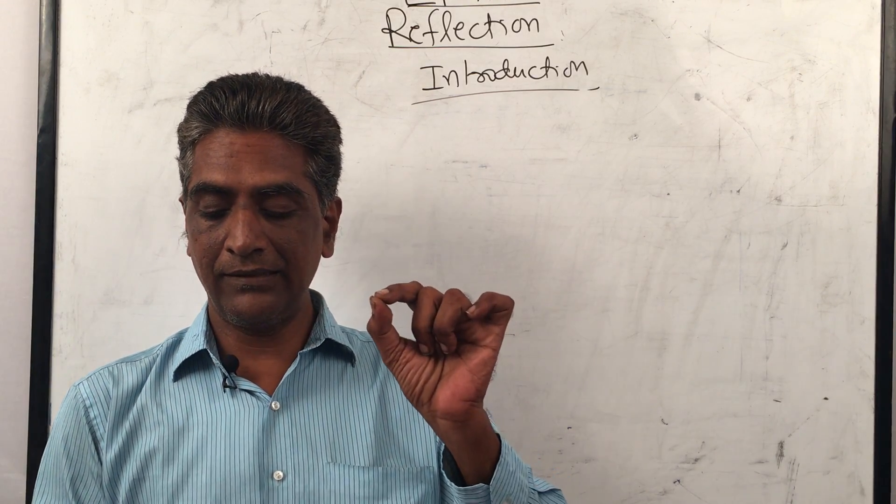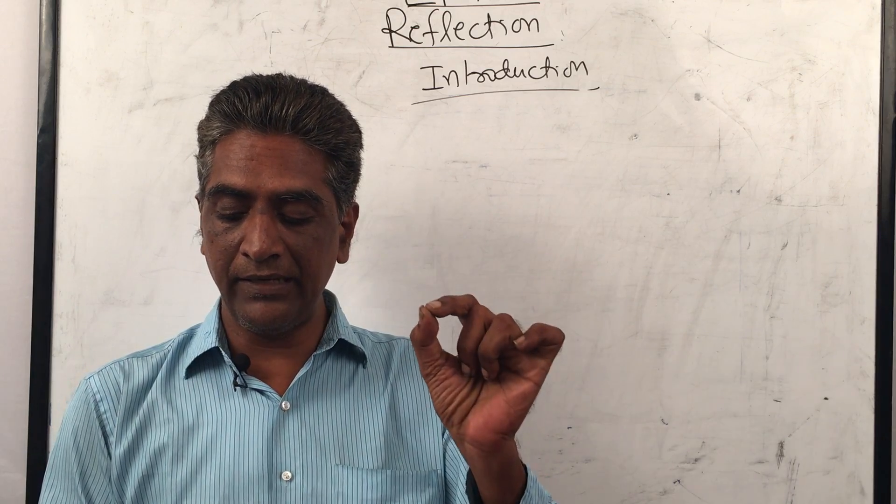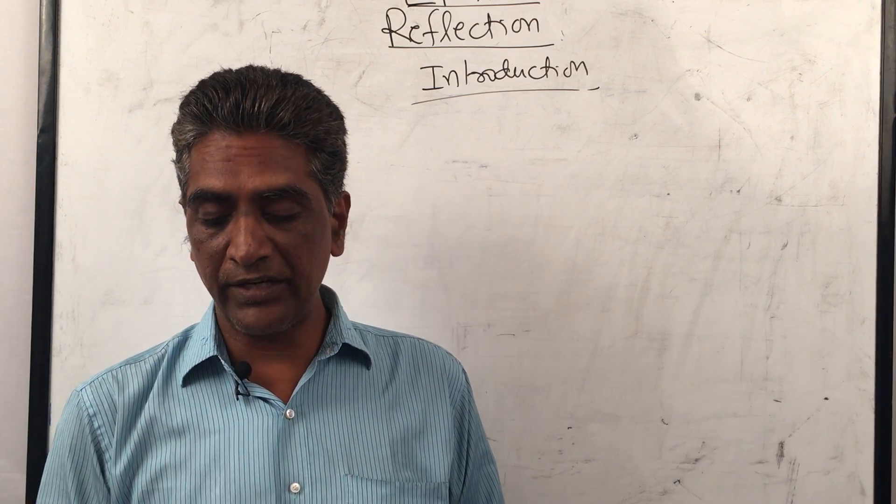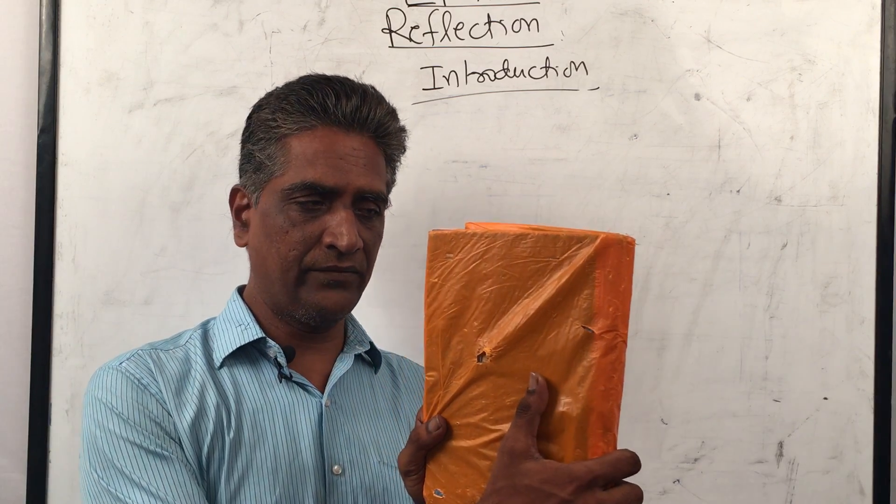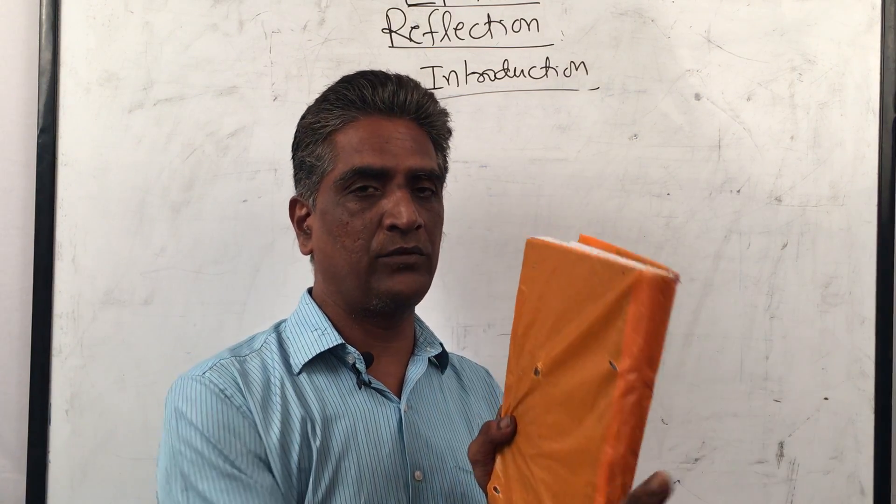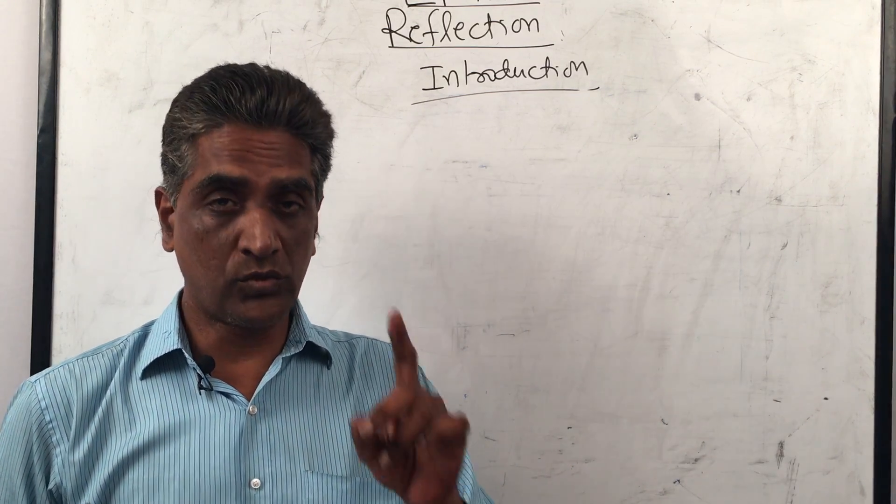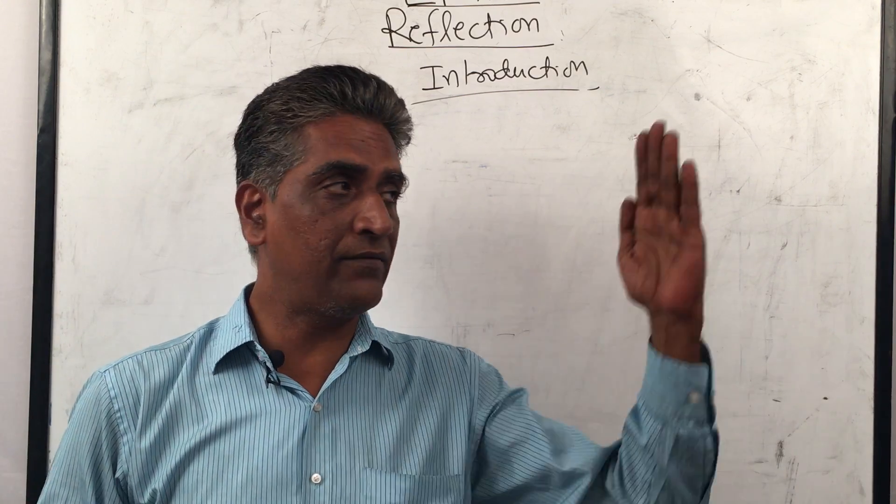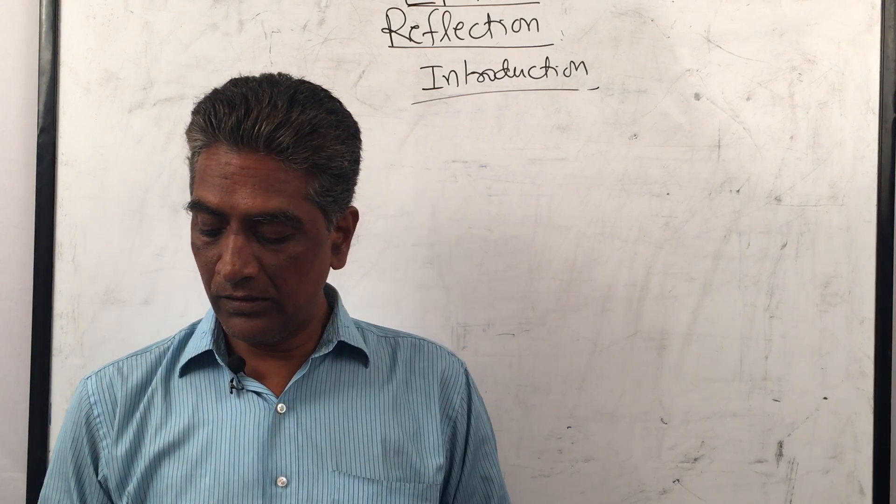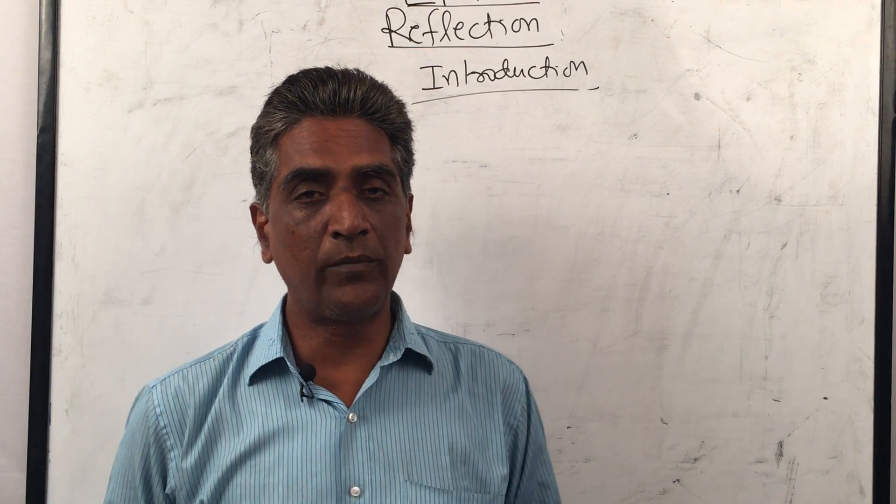A source of light, an opaque object, and a screen are needed to form a shadow. So how do we get a shadow? We put light here, we put an opaque object here, and then you get a shadow. We need a source of light, we need an opaque object to stop it, and we need a screen to cast the shadow.